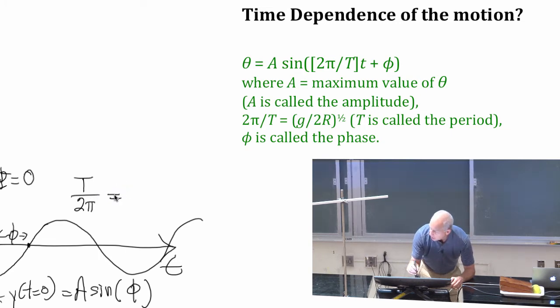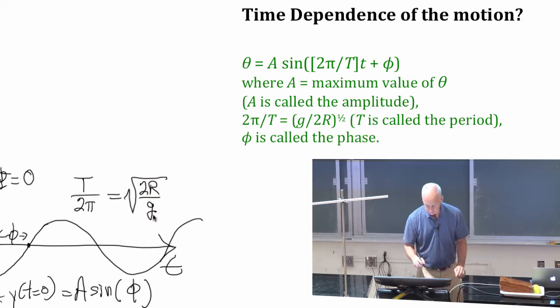Let me write this just for the hoop. I'm going to flip it over. T over 2π is the square root of 2r over g. That's for a hoop.